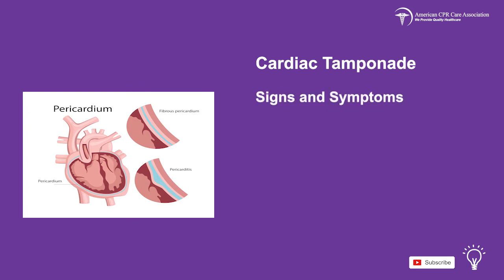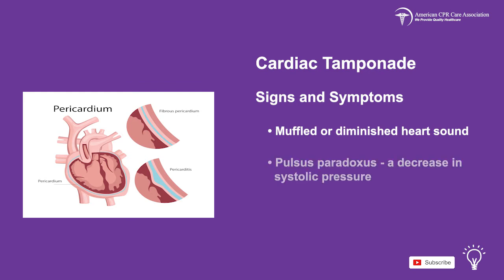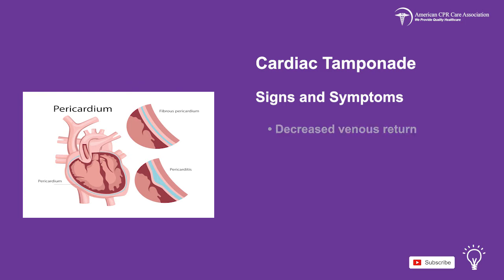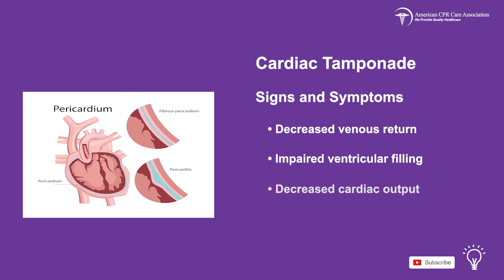Some signs and symptoms of cardiac tamponade include muffled or diminished heart sounds, pulsus paradoxus — which is a decrease of systolic pressure — distended neck veins, decreased venous return, impaired ventricular filling, and decreased cardiac output.